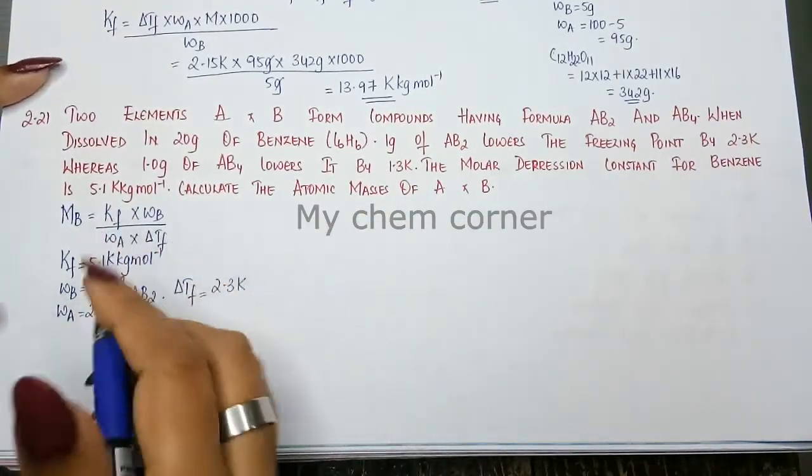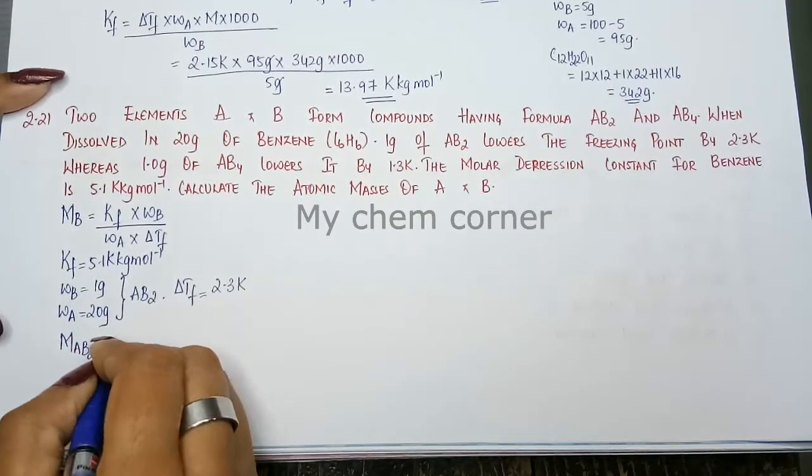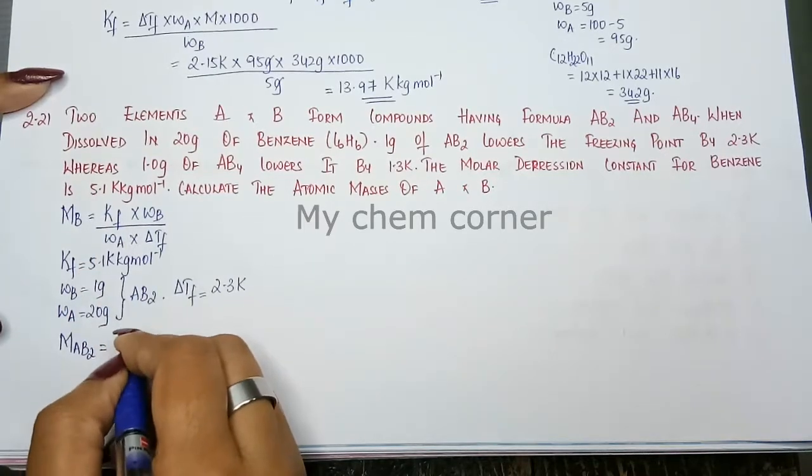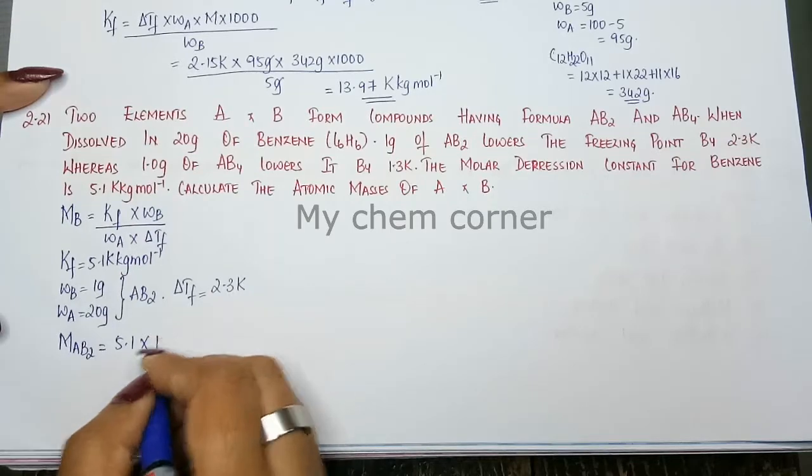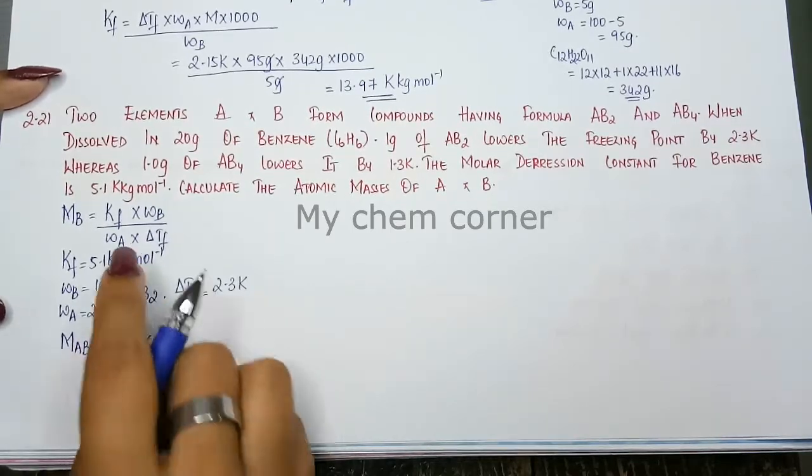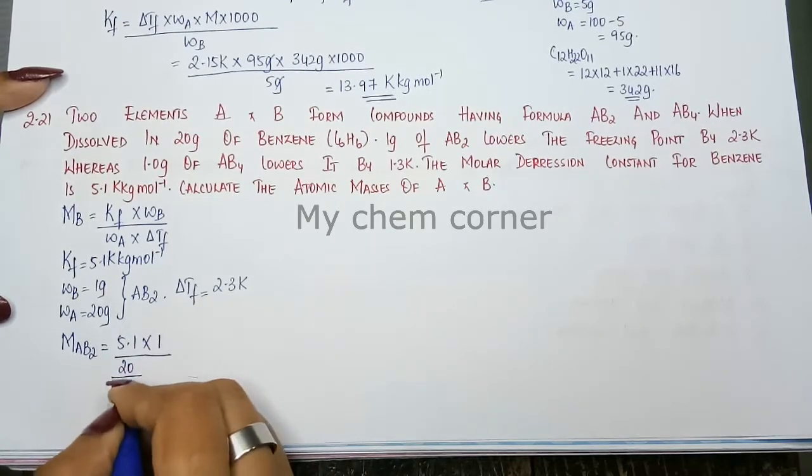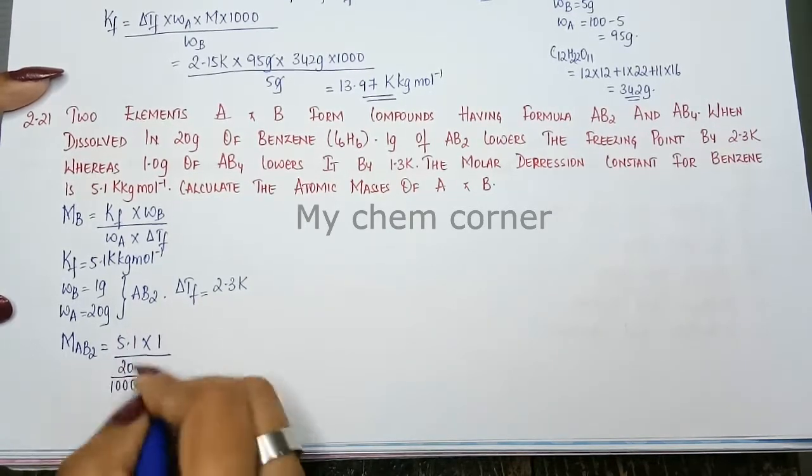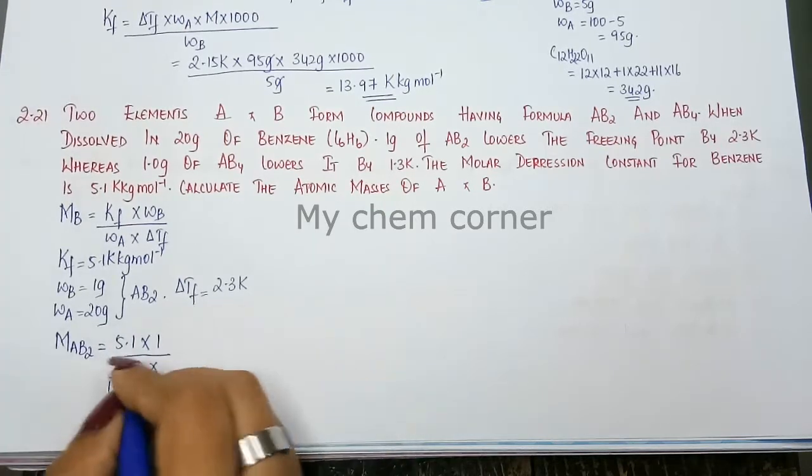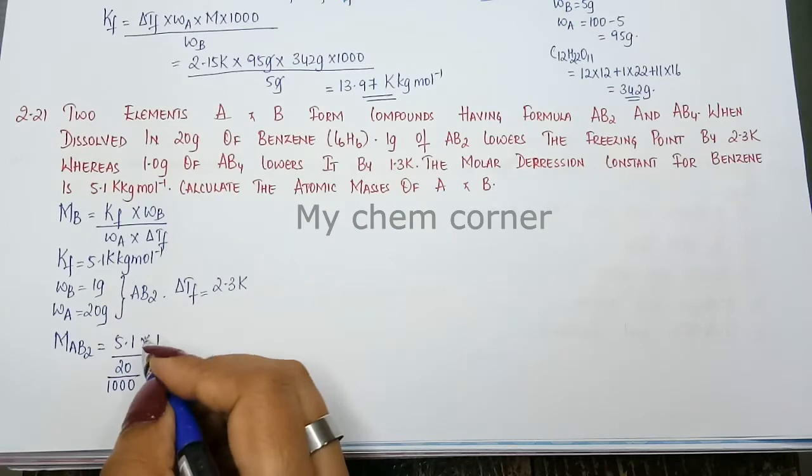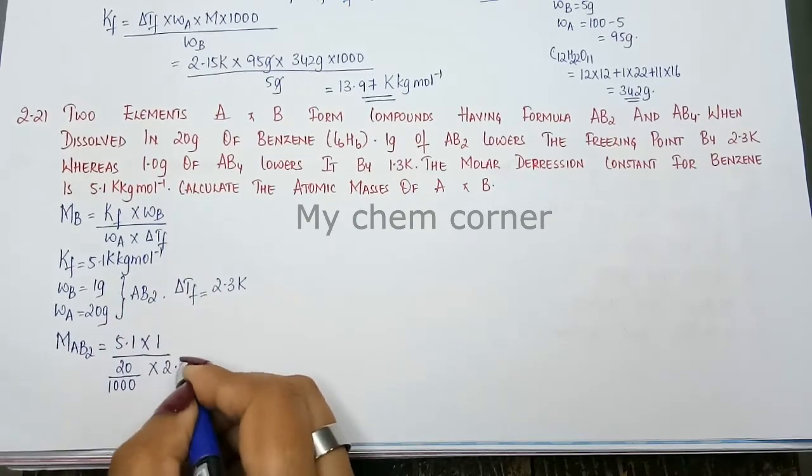So let's substitute in the formula. So molar mass of AB2 is going to be Kf is 5.1 into Wb is going to be 1 gram divided by Wa is going to be 20 grams. 20 grams when you divide it by 1000, that's to convert it to kg. You divide it by 1000. And the last delta Tf is going to be 2.3 Kelvin.